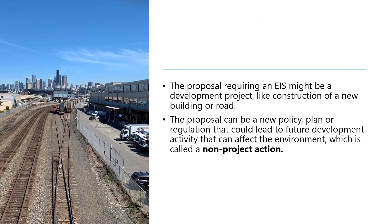The proposal requiring an EIS might be a development project, like construction of a new building or road. The proposal can also be a new policy, plan, or regulation that could lead to future development activity that can affect the environment, which is called a non-project action.